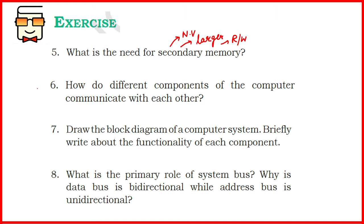Proceeding to the sixth question: how do different components of the computer system communicate with each other? Generally, different softwares allow different components of a computer to communicate. But specifically, when talking about the CPU and memory, communication happens through the system bus. There are three main buses that comprise the system bus: the address bus, the data bus, and the control bus. When the CPU communicates with the memory it uses these buses, and when the CPU sends control signals or instructions it uses the control bus. So in general you can mention both points — software-based communication and system buses.